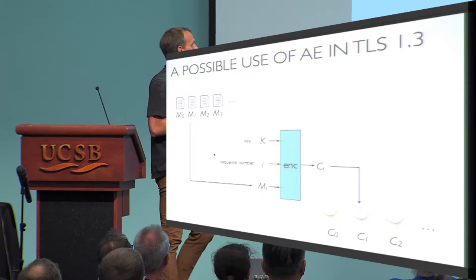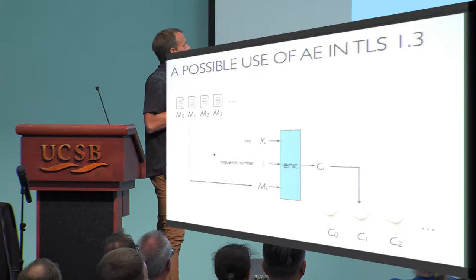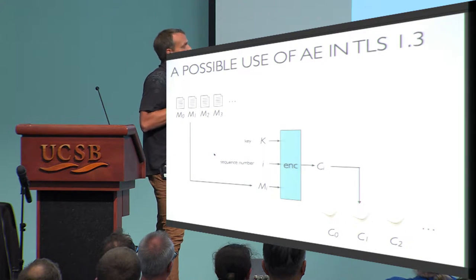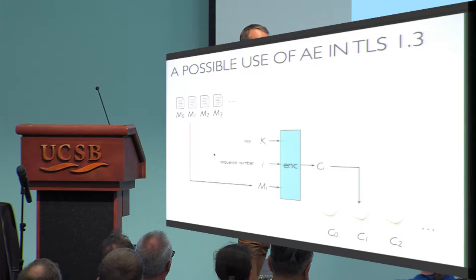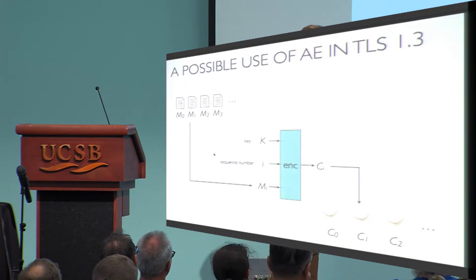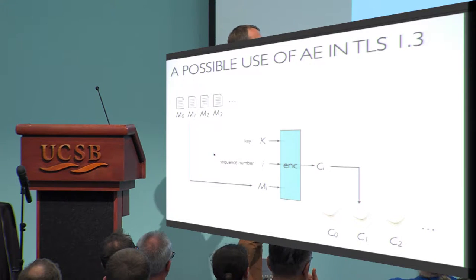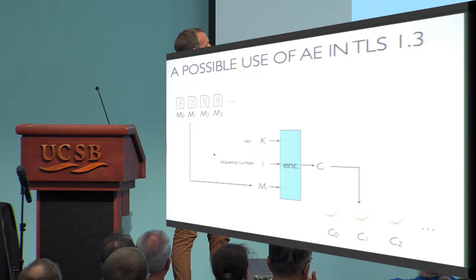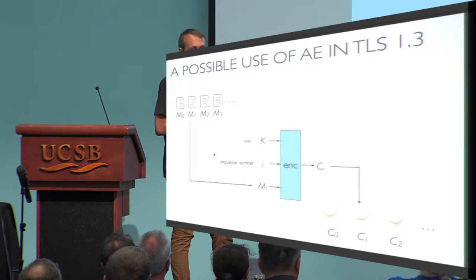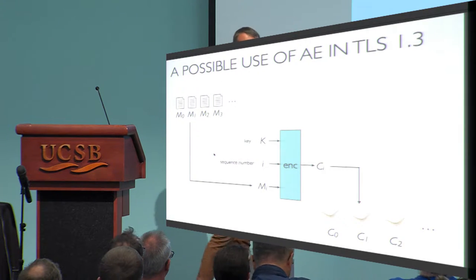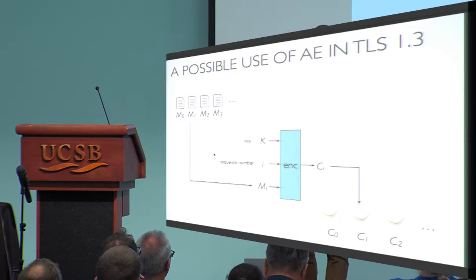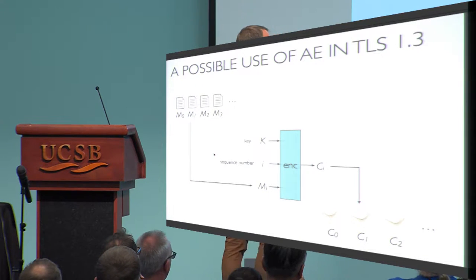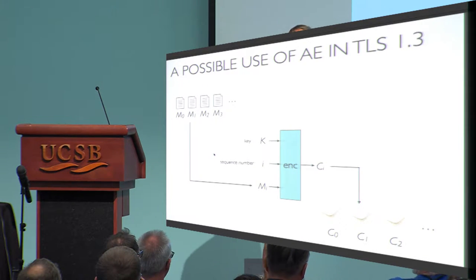We count the messages and use the sequence number as a nonce to encrypt the message. Since nonces are 96 bits long, they won't overflow, so the value is going to be unique and a very good nonce. As long as we're in the single-connection domain — only looking at the security of a single connection — this is a perfectly good scheme.